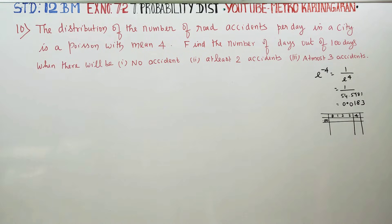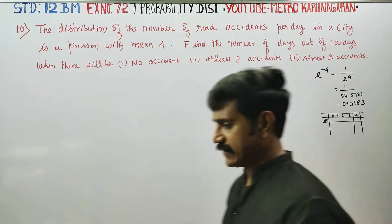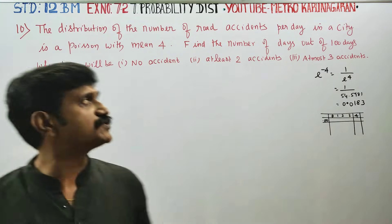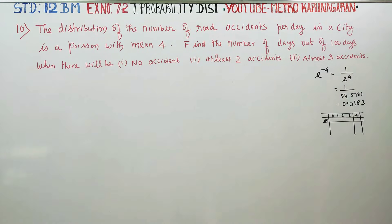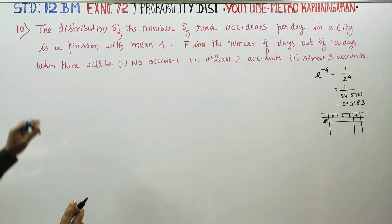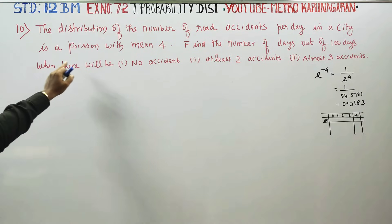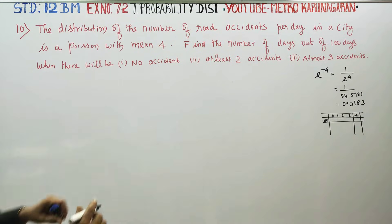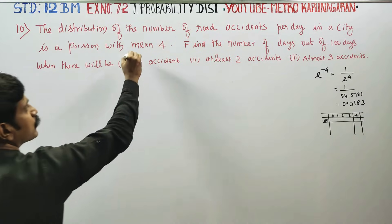Dear 12th standard Business Maths students, I am Etro Karanagaran. In probability distribution, exercise 7.2, sum number 10: the distribution of number of road accidents per day in a city follows a Poisson distribution with a mean of 4.